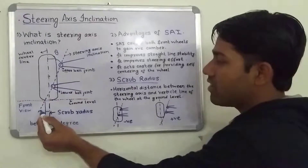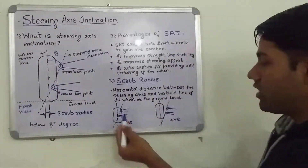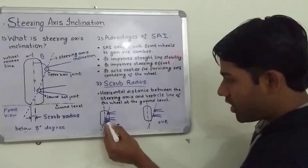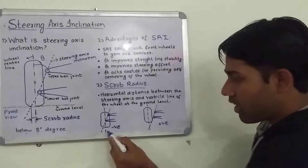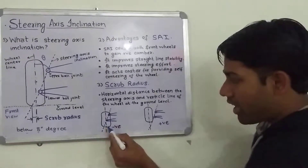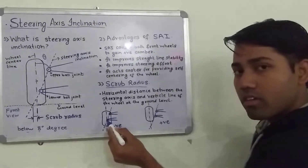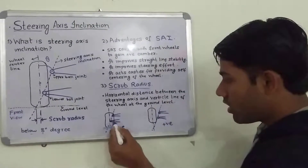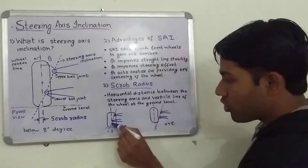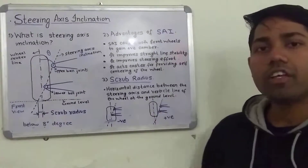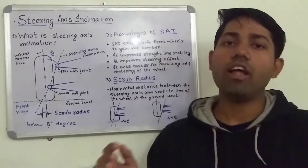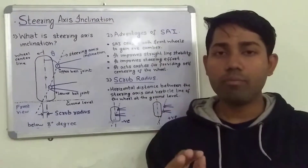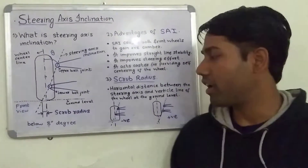When the steering axis and wheel center line — as shown in this figure — intersect above the road surface, it is called a negative scrub radius. This is the steering axis and this is the wheel center line; these two lines intersect above the road surface. Negative scrub radius is very important to provide in a vehicle because it provides more stability and greater speed capability.